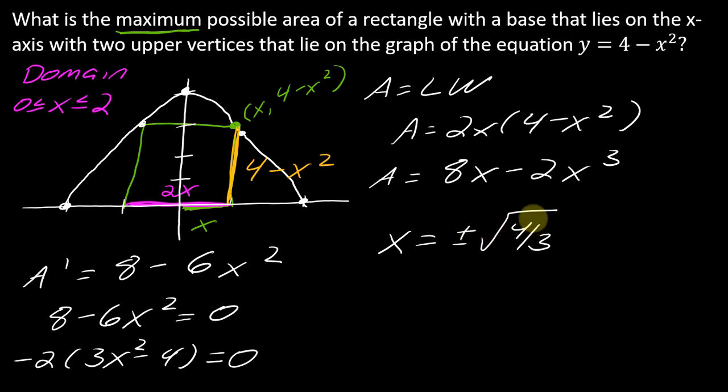But when I look at this, so I know that the negative square root of 4 over 3 will not work, right? Because it's not in the domain. So I can actually exclude that point. So the only point I have to consider in this case is just the square root of 4 over 3. The positive square root of 4 over 3. Okay.